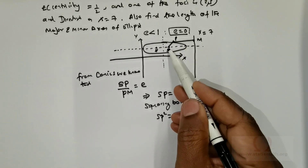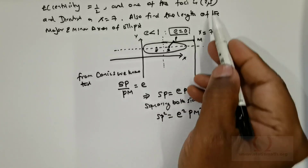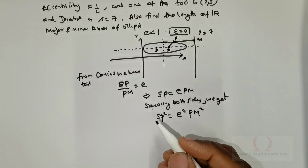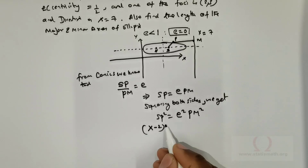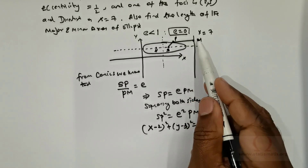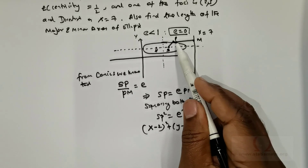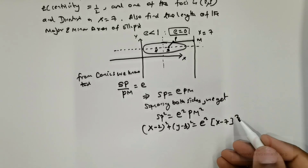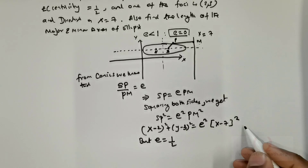SP is the distance from the focus to a point P on the ellipse. The focus is given as (2, 3) and point P is (x, y). Connecting S and P gives (x − 2)² + (y − 3)² = e² × PM². The directrix is x = 7, so connecting P and M gives (x − 7)².